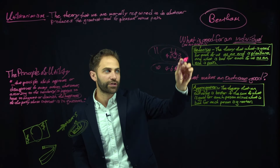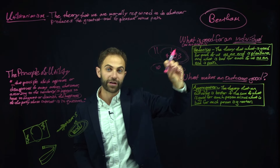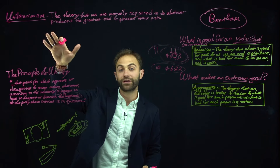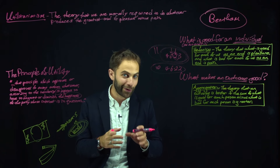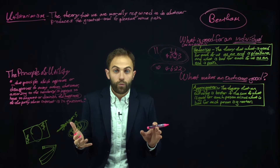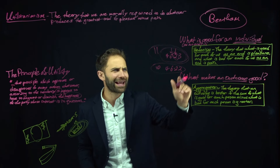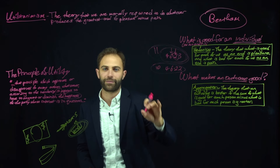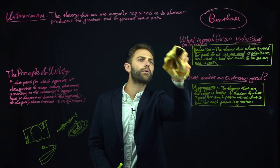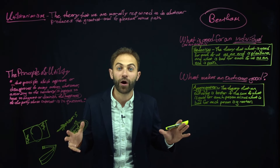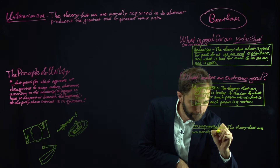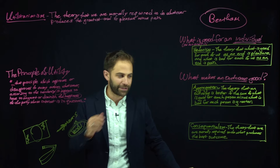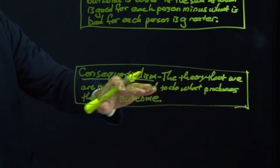Hedonism, aggregation, and utilitarianism are all answering different questions. Hedonism is a theory about what's good for people. Aggregation is a theory about what's good for whole outcomes or situations. Utilitarianism is a theory about what to do — not about how good something is, but about what's the right thing to do. Now we need the third component, the third sub-theory of utilitarianism: consequentialism. Consequentialism says we are morally required to do what produces the best outcome.